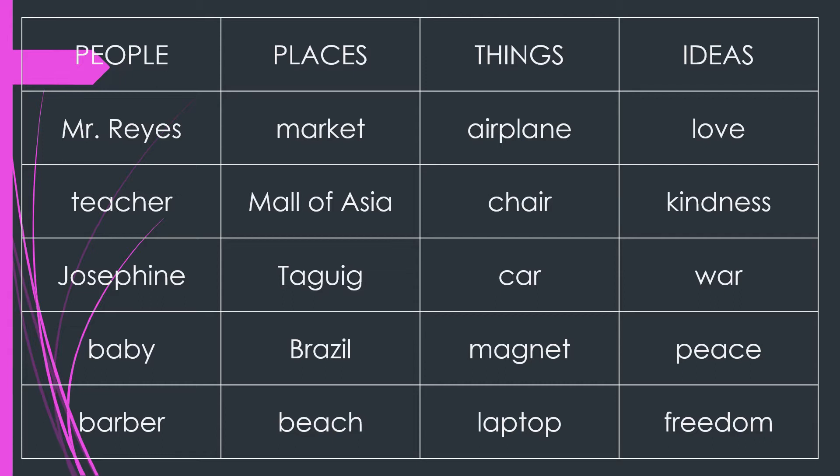For places: market, Mall of Asia, Taguig, Brazil, beach. For things: airplane, chair, car, magnet, laptop.